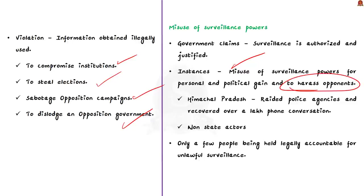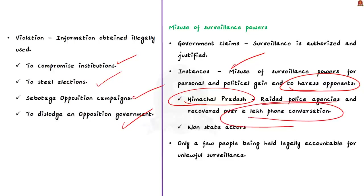Excess surveillance also infringes upon the rule of law and information obtained illegally can be used to compromise institutions, steal elections, sabotage opposition campaigns, or even dislodge an opposition government. The government claims its surveillance is authorized and justified, but the author fears misuse. For instance, in 2012, a new government in Himachal Pradesh raided police agencies and recovered over a lakh phone conversations of political members and senior police officials that had been illegally collected. There have also been many non-state actors engaged in illegal surveillance, yet only a few have been held legally accountable.